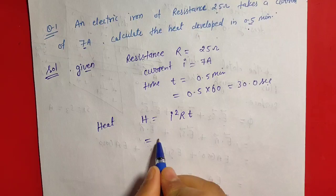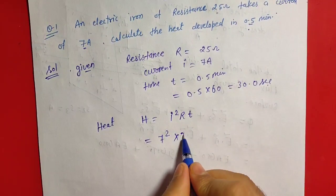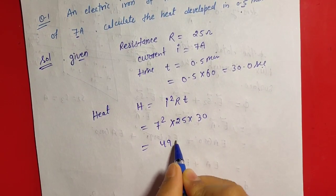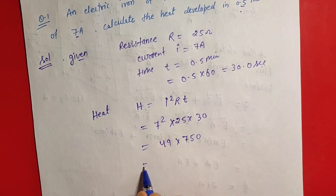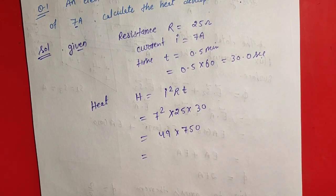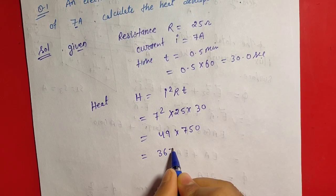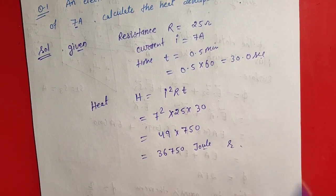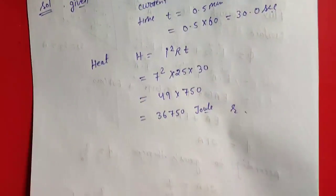I square, it is 7, 7 square R 25 into T 30. 7 square 49 into 25, 30. 75, 7500 and 49 and 75 multiply, we get 36,750 Joule. It is a simple question which is based on heating effect of electric current.